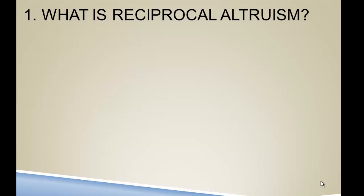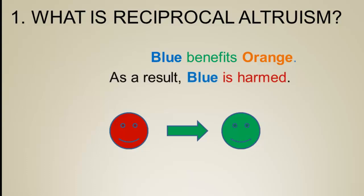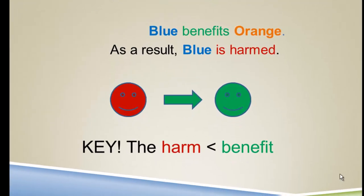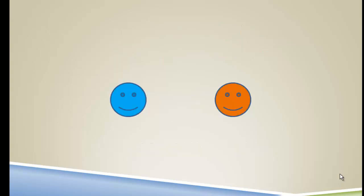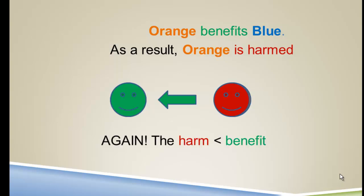One solution is Robert Trivers' model of reciprocal altruism. We have two agents, blue and orange. In the first interaction, blue benefits orange, and as a result, the reproductive success of blue is harmed. A key observation here is that the harm is assumed to be much less than the benefit. When altruism is then reciprocated, orange benefits blue, and orange is harmed — again, much less than the benefit.